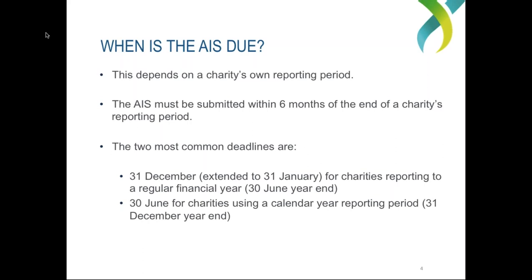There is an extension listed on screen. Even though the six-month deadline following the regular financial year is 31 December, the Commissioner has allowed a one-month extension for those charities because of the Christmas and New Year period when the ACNC is shut. This extension allows for the lost time charities may have had in December if they wanted to contact the ACNC or get help completing an Annual Information Statement. So even though 31 December is technically the due date, the extension means the due date becomes 31 January, which is only a week away — meaning a lot of charities are trying to get their AIS submitted in the next few days.